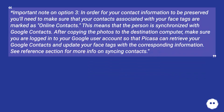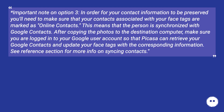Important note on option 3: in order for your contact information to be preserved, you'll need to make sure that your contacts associated with your face tags are marked as online contacts. This means the person is synchronized with Google Contacts. After copying the photos to the destination computer, make sure you are logged into your Google user account so that Picasa can retrieve your Google contacts and update your face tags with corresponding information.